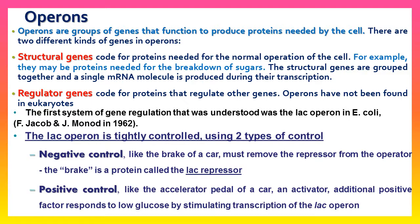In prokaryotes, genes are found in clusters with one regulatory region called an operon. Operons are groups of genes that produce proteins needed by the cell. There are two different kinds of genes in an operon: structural genes and regulatory genes. Structural genes code for proteins needed for the normal operation of the cell — for example, proteins needed for the breakdown of sugar. A single messenger RNA molecule is produced during their transcription.